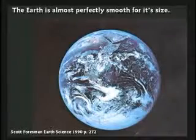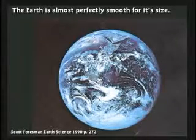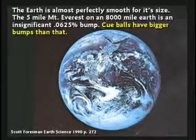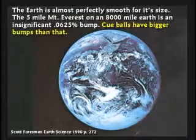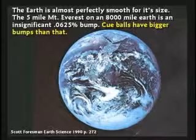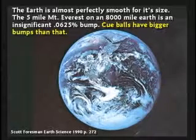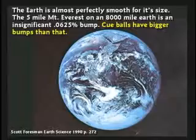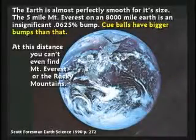The earth today is almost perfectly smooth for its size. Mount Everest, the biggest mountain, is five miles tall — but on an 8,000-mile earth, that's 0.0625 percent. Cue balls have bumps bigger than that. If you shrank the earth down to the size of a cue ball, it would be smoother and rounder than the cue ball. Even though the earth has giant mountains, they're insignificant compared to the size of the earth.